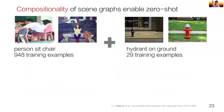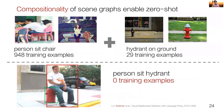In fact, scene graphs provide a compositional structure that enables zero-shot prediction. By looking at examples of people sitting on chairs and fire hydrants on the ground, we can detect when a person is sitting on a fire hydrant — something that the model has never seen before.